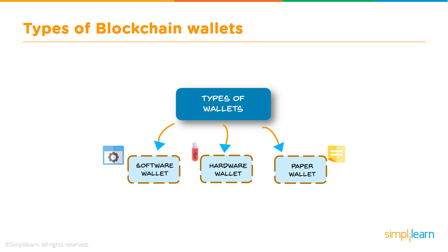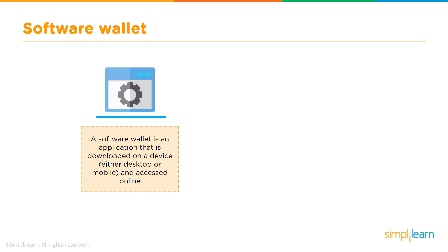Wallets can be further distinguished into software wallets, hardware wallets — which are USB-driven devices you plug into your computer — and paper-based wallets, where you print your public key and private key on paper and keep it in a secure place.